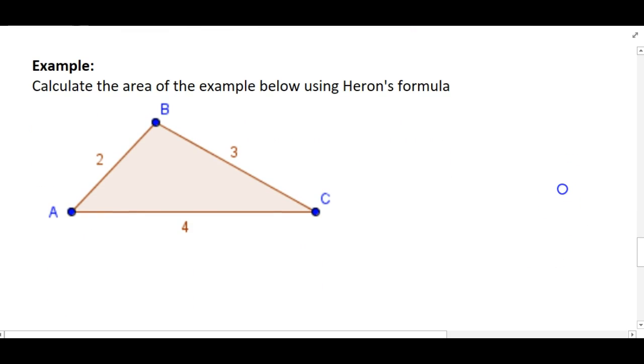So try that now on this example. Off you go. Alright, so the first job, work out the semi-perimeter. Two plus three plus four makes nine. So S is going to be 2 plus 3 plus 4 makes 9 divided by 2 gives us 4 and a half or 4.5.